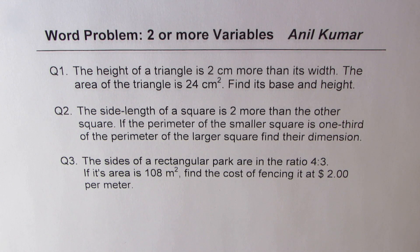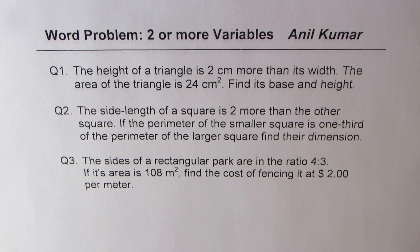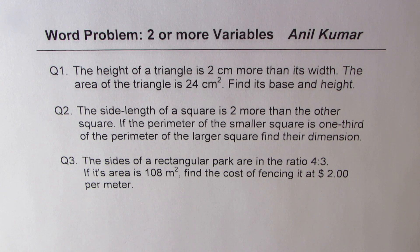Question number one: the height of a triangle is two centimeters more than its width. The area of the triangle is 24 centimeters squared. Find its base and height. Question number two: the side length of a square is two more than the other square. If the perimeter of the smaller square is one-third of the perimeter of the larger square, find their dimensions.